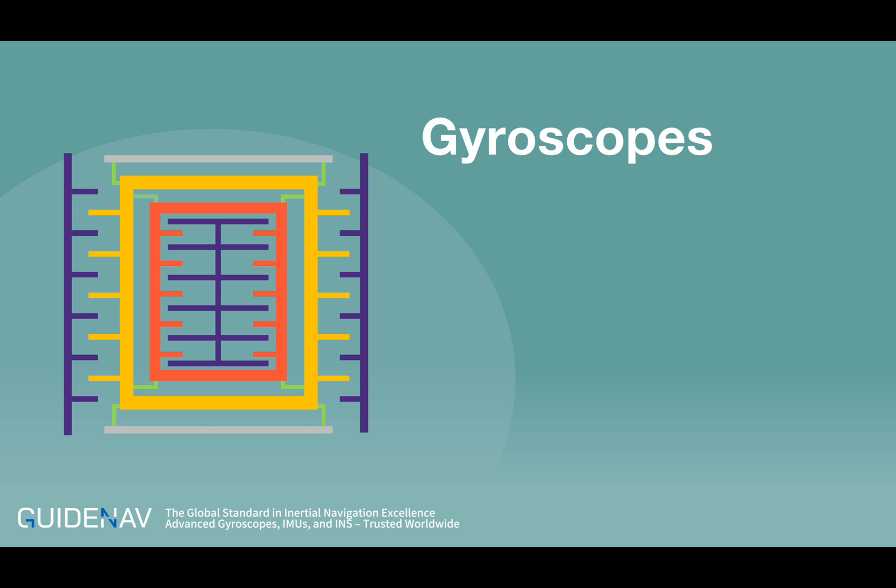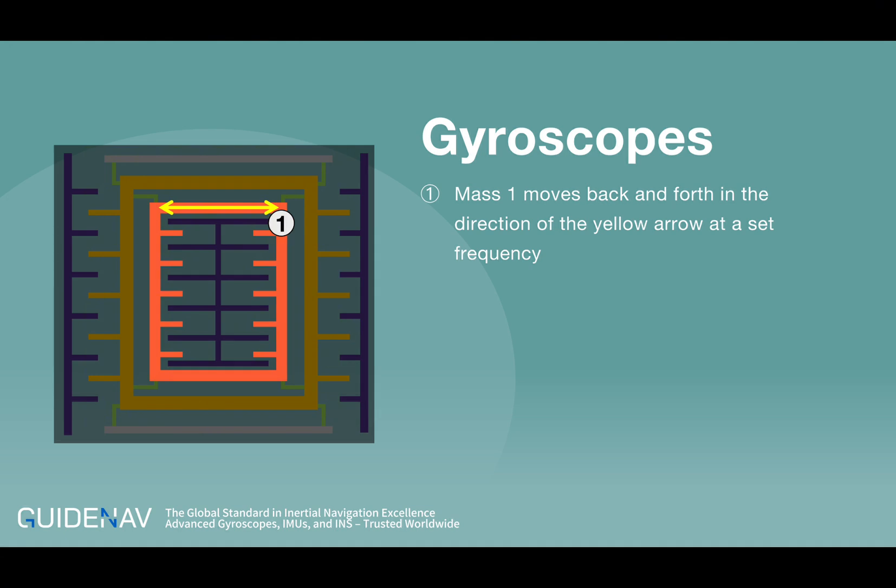Next is the gyroscope, which uses the Coriolis effect to measure angular velocity. Mass one moves back and forth in the direction of the yellow arrow at a set frequency. At this moment, if an angular velocity is applied to the system, assuming it is rotated according to the blue arrow,